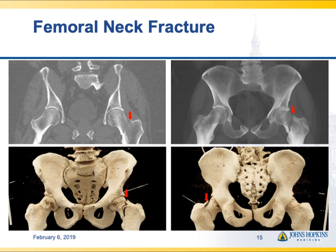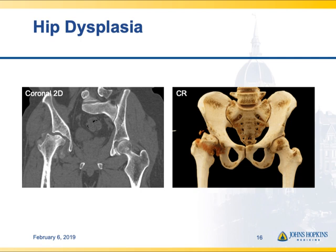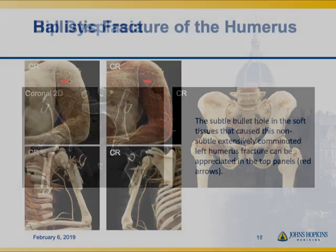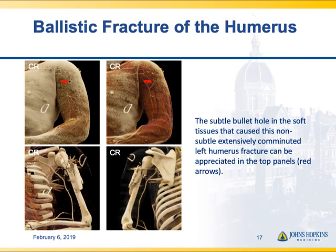Here's a femoral neck fracture, maybe a little subtle on 2D but showing up well in the volume rendered and cinematic rendered images. And here's hip dysplasia — the 2D images show the dysplastic right femoral head and acetabulum, but how those structures really fit together is much better shown with the depth you get from the cinematic rendered image.